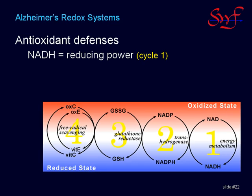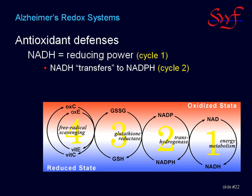NADH is the underlying foundation of the Antioxidant Defense System. NADH carries reducing power. When NADH transfers its reducing power, where cycle 1 touches cycle 2, it becomes NAD, which is the oxidized form ready for collecting more energy. And NADP becomes reduced to NADPH, which is the initial reservoir for reducing equivalents.